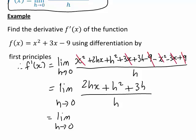You'll notice every term on the numerator is multiplied by h and on the denominator we have h. So let's take h out of the numerator as a common factor giving us h times (2x + h + 3) divided by h.